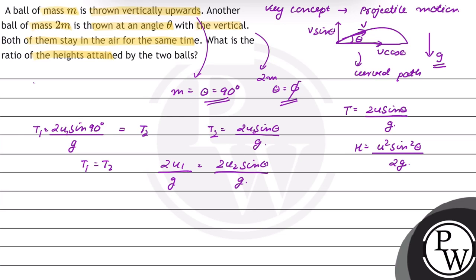Since sin 90° ki value hoti is 1, height H1 = u1² / 2g, and for particle 2, H2 = u2² sin² θ / 2g.